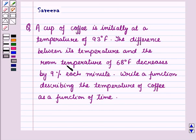Hello and welcome to the session. In this session we will discuss a question which says that a cup of coffee is initially at a temperature of 93 degrees Fahrenheit. The difference between its temperature and the room temperature of 68 degrees Fahrenheit decreases by 9% each minute. Write a function describing the temperature of coffee as a function of time.